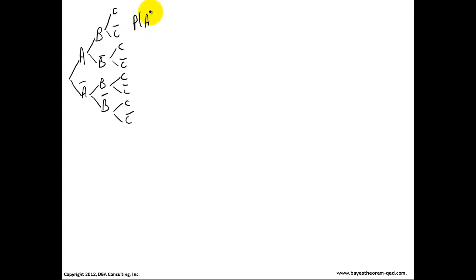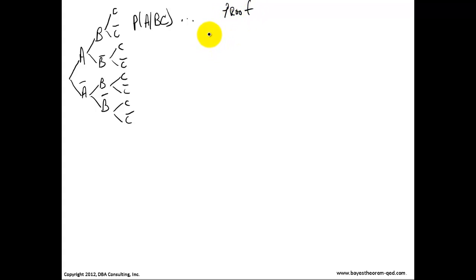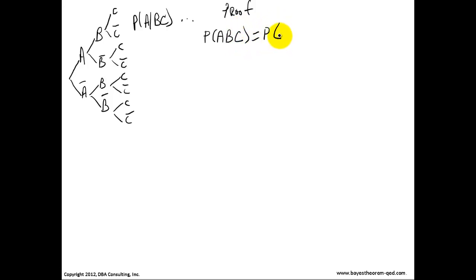What I want to find is the probability of A given B-C. So to do that, I'll do a proof. I'll set the joint A-B-C equal to the joint C-B-A.